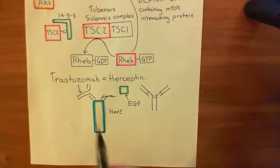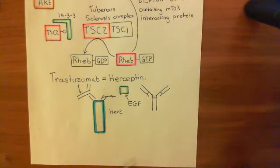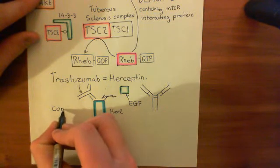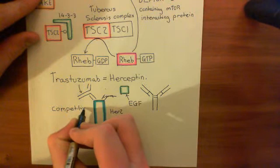Right, so trastuzumab binds to the HER2 receptor and doesn't activate it. That's important. It doesn't activate the conformational change that then leads to the dimerization. Instead, it just binds and effectively acts as a competitive antagonist for the receptor and stops the EGF from being able to bind and stimulate the receptor.